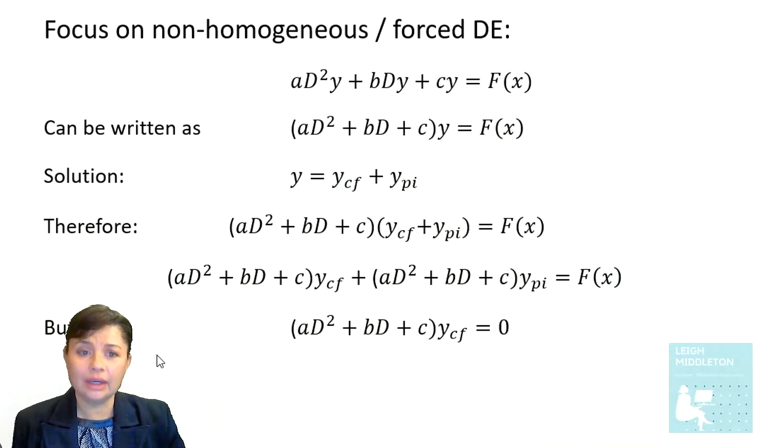Now we know that your first term, this trinomial multiplied by your complementary function, is equal to zero. That comes from the homogeneous differential equation. And we then, in the previous section, solved that homogeneous differential equation, looking at your auxiliary equation. So if that is equal to zero,